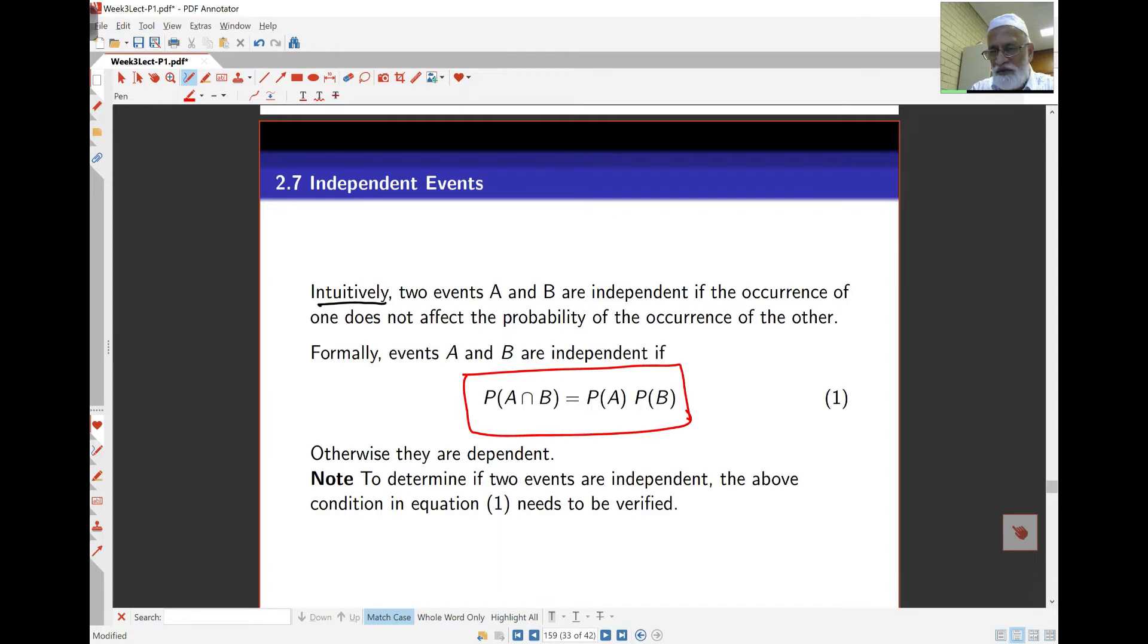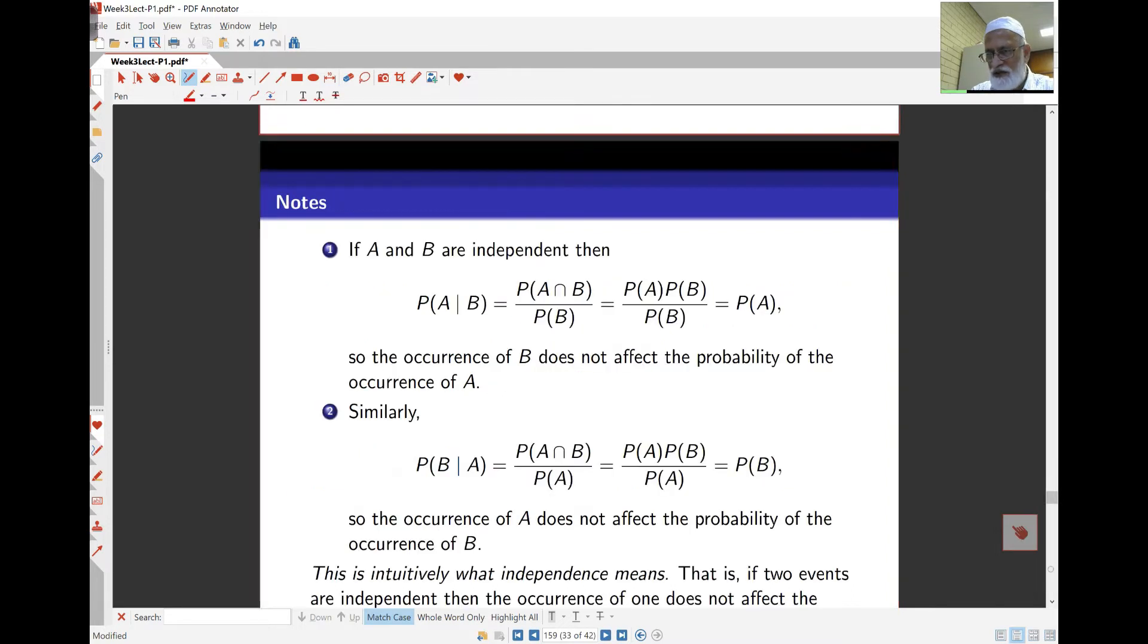The way it's defined, though, is that probability of A intersect B is probability of A times probability of B. In other words, the probability of the intersection splits up or factorizes into just multiplying the individual probabilities. If this equation or formula doesn't hold, that means the events are not independent. So, for independence, we verify this rule here.